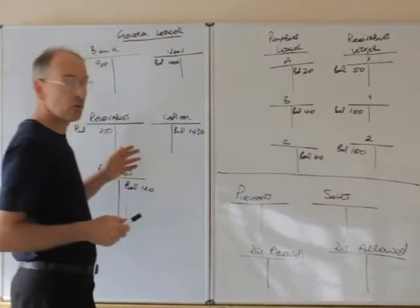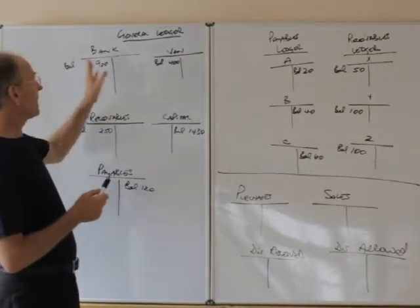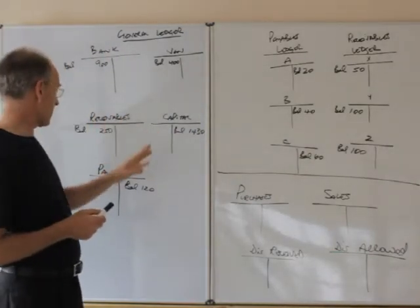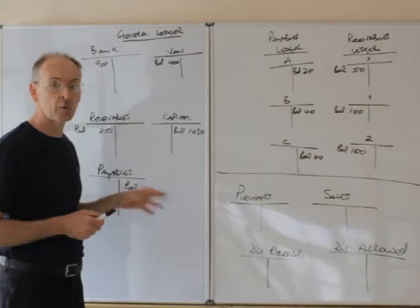I've got on the board a general ledger with a bank account, van account, receivables, capital, and payables, just showing the opening balances on those.